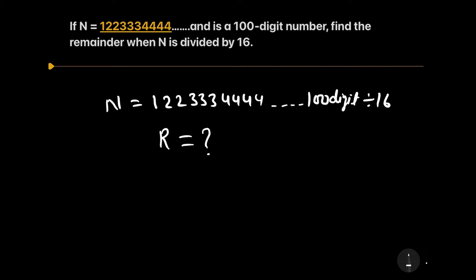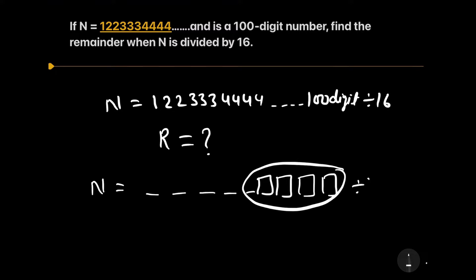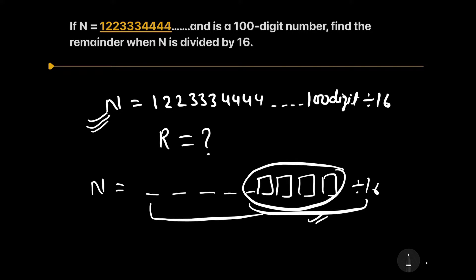To solve this question, first of all we need to know the divisibility rule of 16. The divisibility rule of 16 tells us that for any number, whatever the digits, when the last 4 digits are divisible by 16, then the whole number is divisible by 16. So we only need to find the last 4 digits of this number.